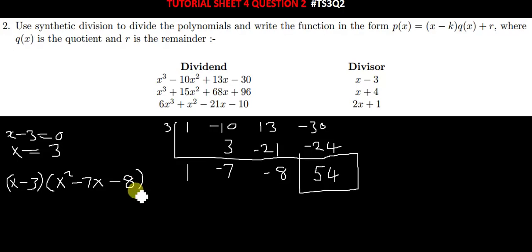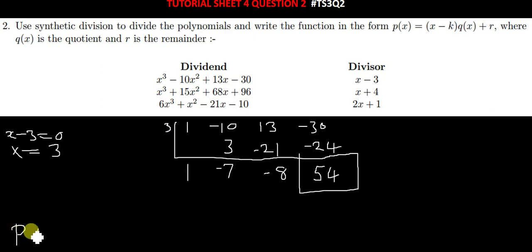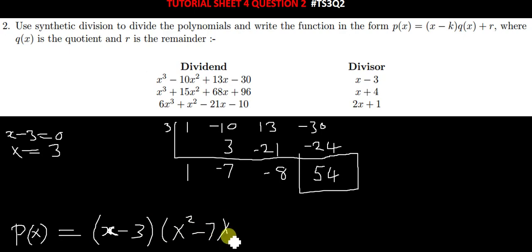We've been told that Q(x) is the quotient, so we write it that way. So P(x) is equal to x minus 3, times the quadratic quotient. The first coefficient is 1 for x squared, negative 7 is the coefficient of x in the quadratic equation, and negative 8 is our constant in the quadratic equation. Then plus r, so my r is 54.